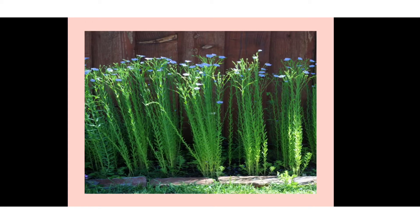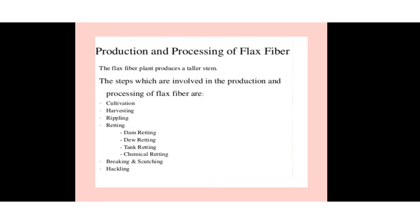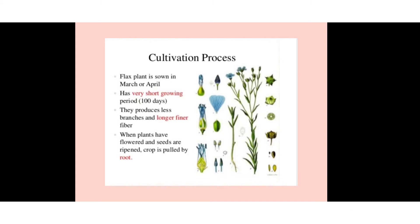The flax plant generally produces blue and white flowers with a long stem and leaves along the stem. The flax fiber plant produces a taller stem. The steps involved in the production and processing of flax fiber are: cultivation, harvesting, and retting. Retting includes four steps: dew retting, water retting, tank retting, and chemical retting. After retting comes breaking and scutching, and finally hackling.